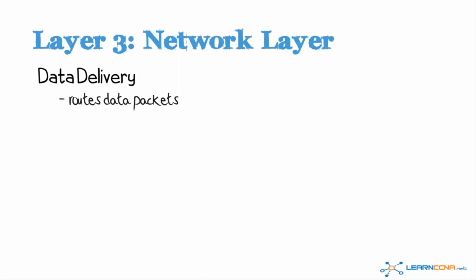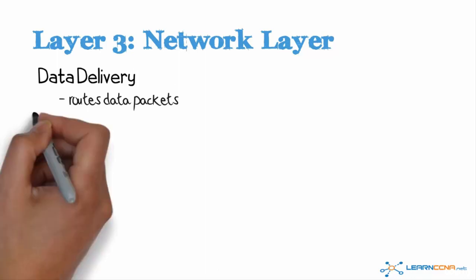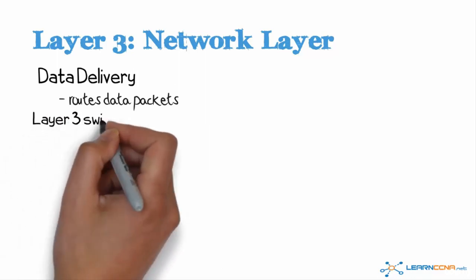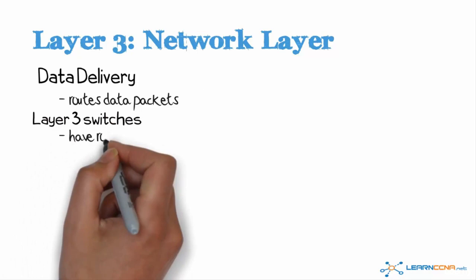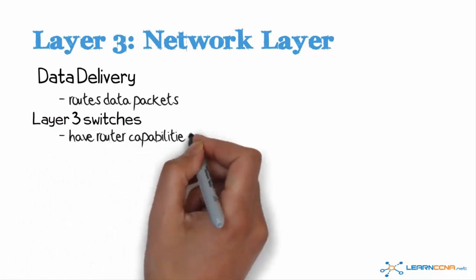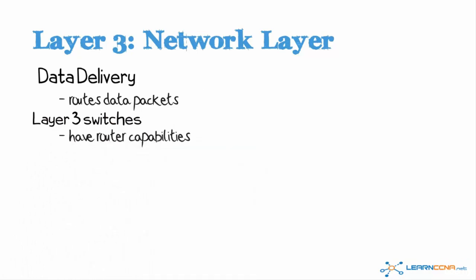Cisco and other vendors also have what is called layer 3 switches. Layer 3 switches have router capabilities so that they can also route packets between VLANs within a network, as an example.